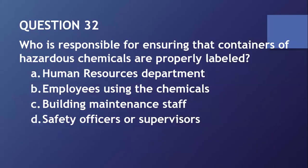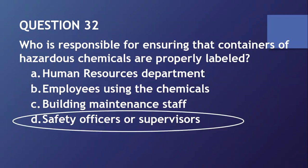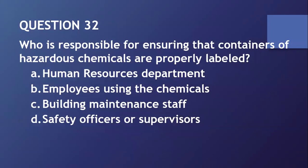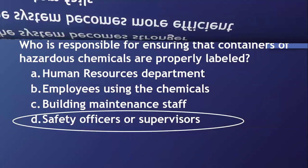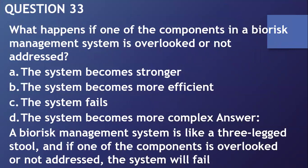Question number thirty-two: who is responsible for ensuring that containers of hazardous chemicals are properly labeled? The safety officers or supervisors are responsible for that. Question number thirty-three: what happens if one of the components in a biorisk management system is overlooked or not addressed? The system will fail. The biorisk management system is like a three-legged stool — if you remove one leg, the other two cannot stand. The system will fail.